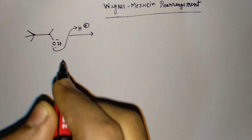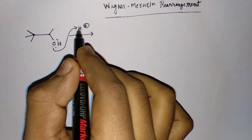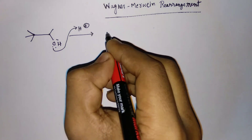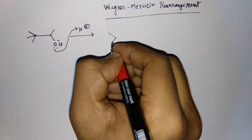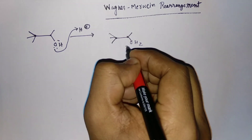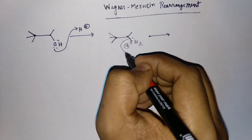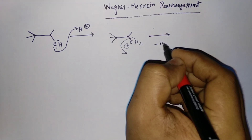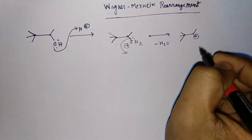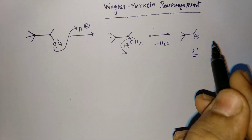Let's take an example. When this kind of alcohol is treated with H⁺ (acid), first protonation will occur, and then we will get a leaving group. Since water is a good leaving group, H₂O will leave the system and we will get a secondary (2°) carbocation.